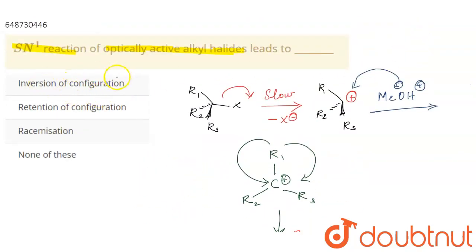Inversion of configuration? No, we have not got any product which is completely inversion of the other reactant. We have got both the products. It is also not a retention. We have got both retention products and inversion products, so they are racemization products. C is the correct answer and D is the incorrect answer.